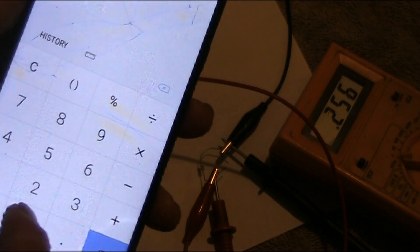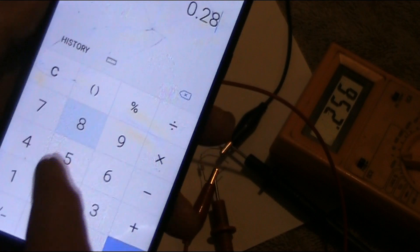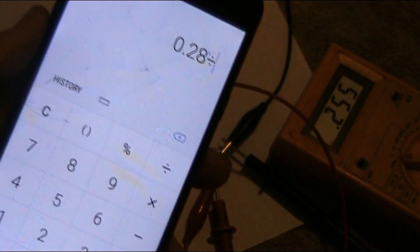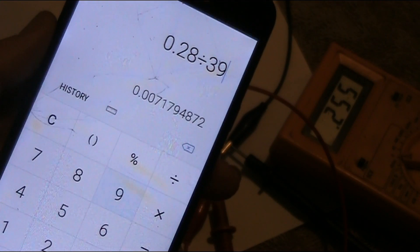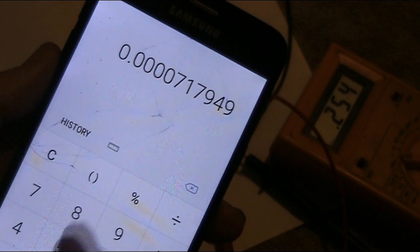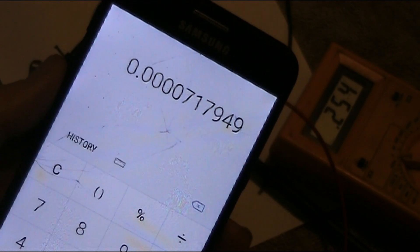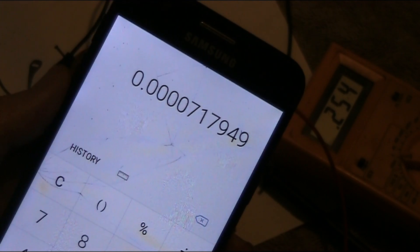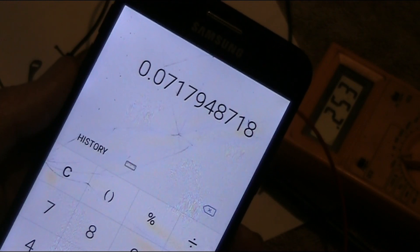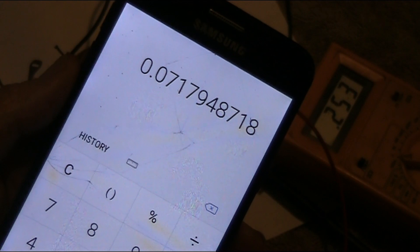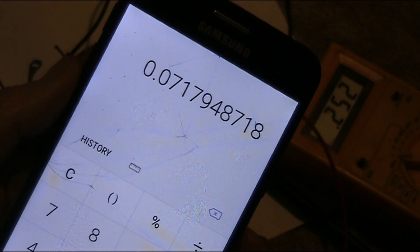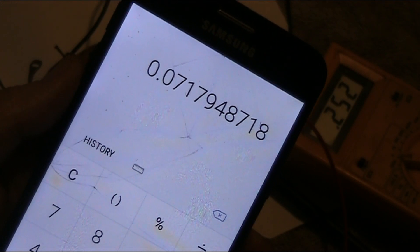So our voltage is 0.28 divided by 3900, equals a tiny fraction of an amp. Let's times it by 1000 to convert it to milliamps. And it's well under a milliamp - 0.071. So it's about 70 microamps.